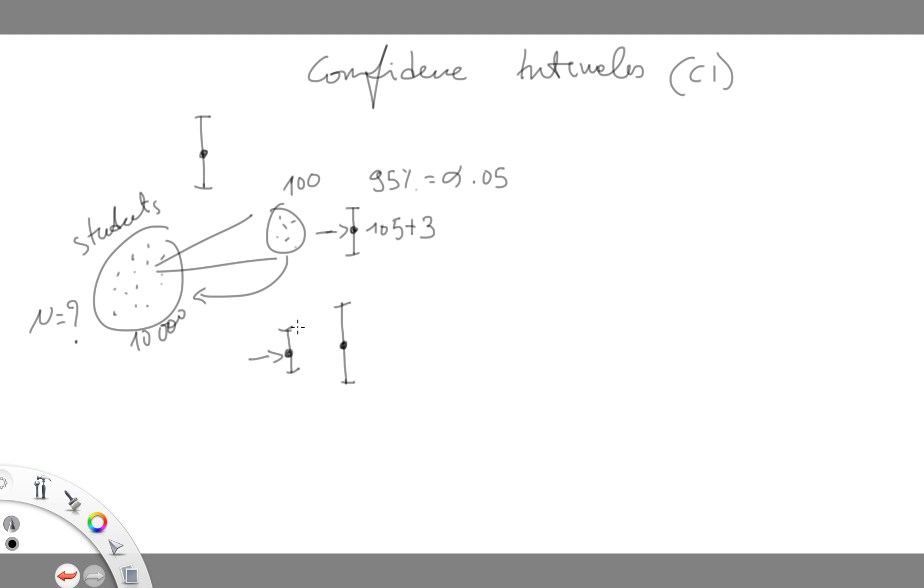The values within these margins are plausible, more plausible than values beyond these two margins. Therefore, as you can see, as the length of the CIs decreases, we're just more precise with our estimate.